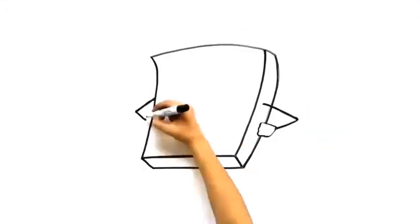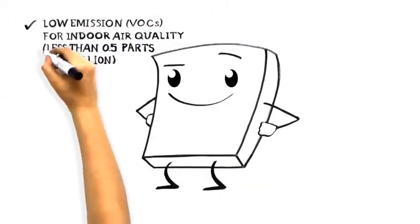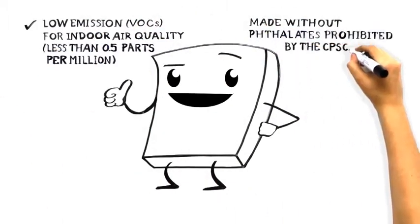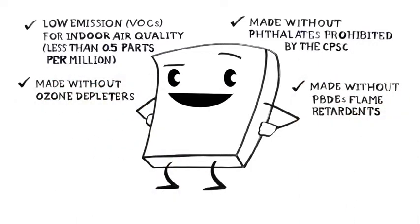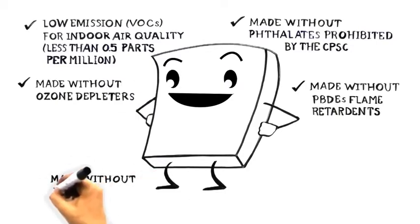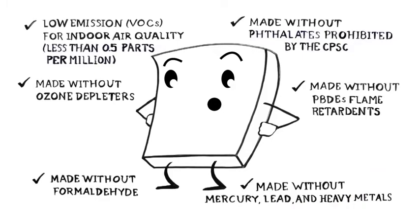CertiPUR-US approved foams are low in VOC emissions for indoor air quality, made without prohibited phthalates, made without ozone depletors, made without PBDE flame retardants, made without formaldehyde, and made without mercury, lead, and heavy metals.